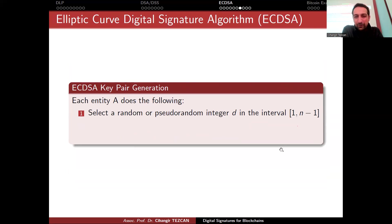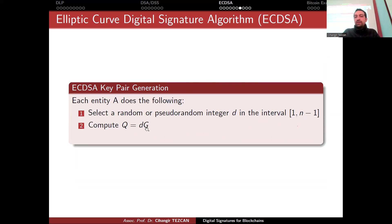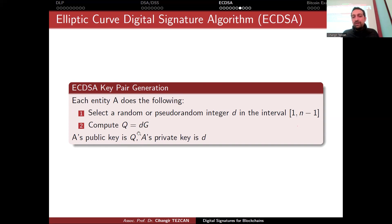Now, for ECDSA key pair generation, each entity does the following: select a random or pseudo-random integer d in the interval [1, N-1], then compute Q = d × G, meaning you add G to itself d many times — this is scalar multiplication — and you obtain another point on the curve. Your public key is this point Q, and your private key is the integer d, because nobody knows how many times G was added to itself to obtain Q.